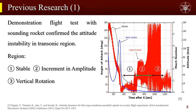Regarding previous research: in 2012, as part of the project, a flight test was conducted to measure the attitude behavior and characteristics. The spacecraft was equipped with a variety of instruments to measure position, attitude data, as well as temperature and pressure history of each part. As for the attitude behavior, attitude instability was confirmed in the transonic region.